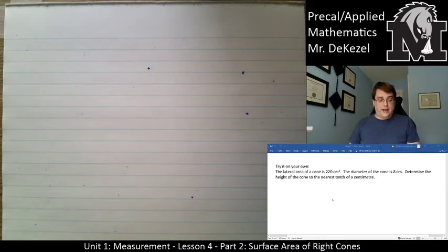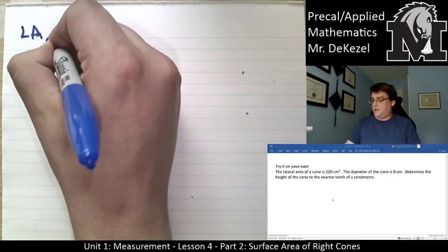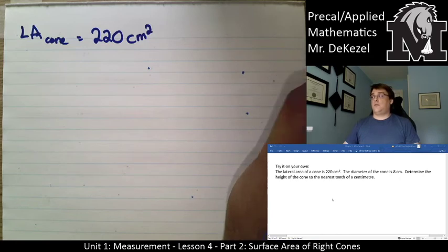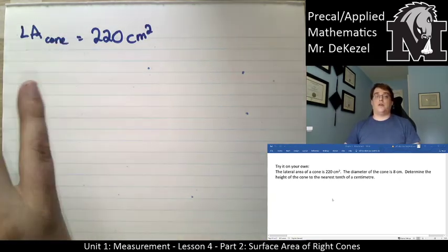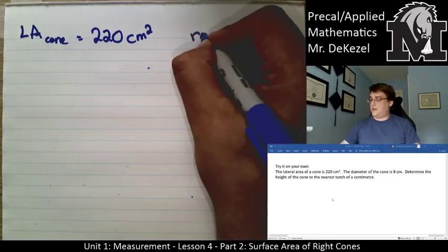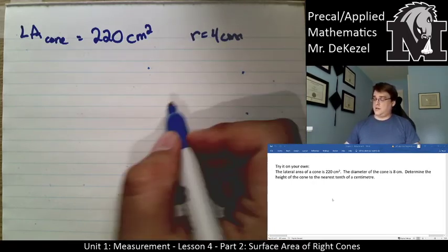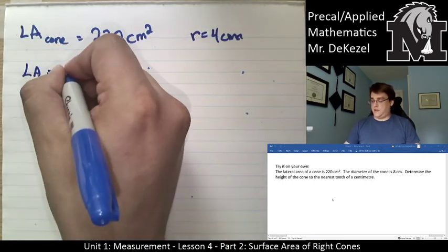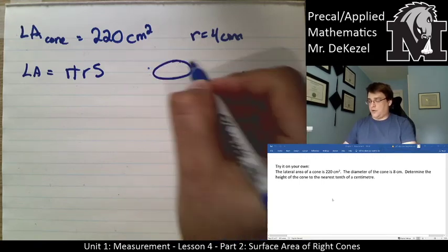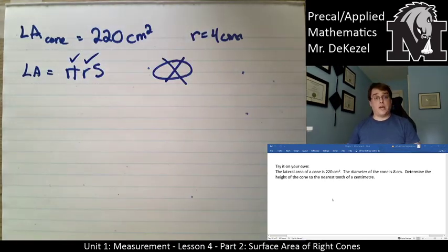Welcome back. The lateral area of a cone is given as 220 centimeters squared — that is not the full surface area, just the lateral area, not including the bottom. The diameter is 8 centimeters, so the radius is 4 centimeters. We need to determine the height to the nearest tenth. The lateral area formula is only πrs — there is no πr² base term here.